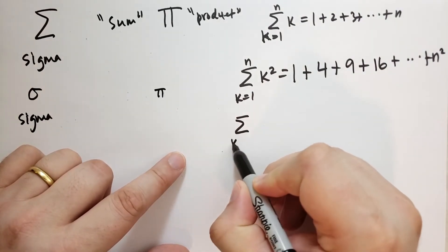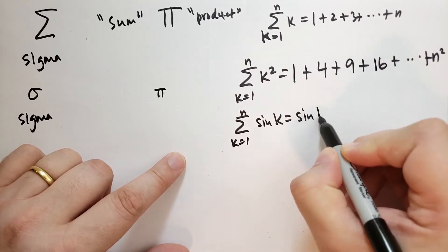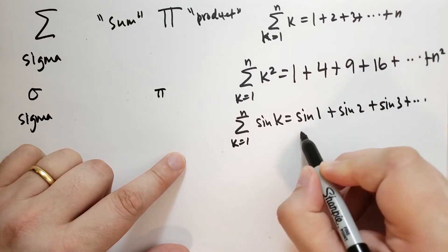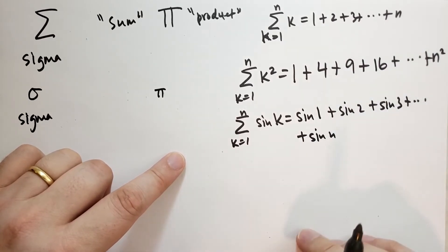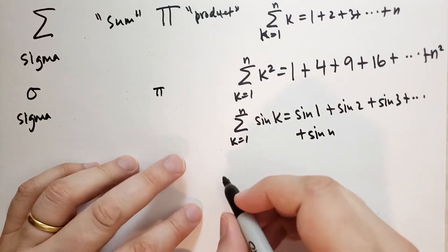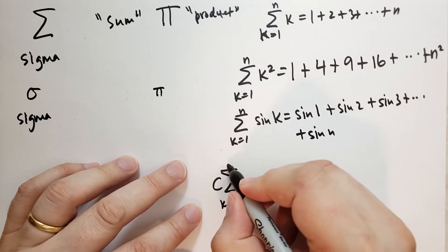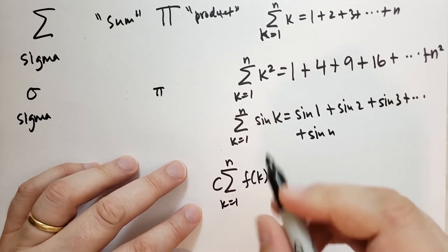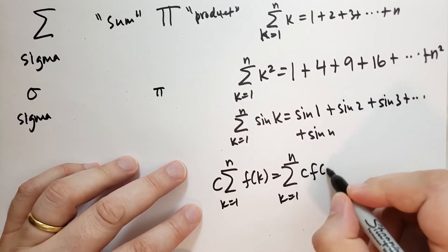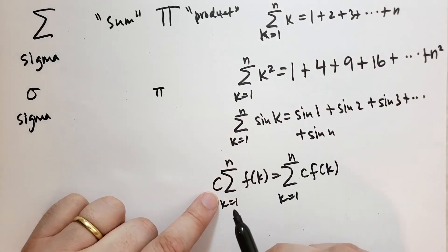Let's do the sum from k=1 to n of sin(k). That's going to equal sin(1) + sin(2) + sin(3) + ... + sin(n). Now, there are some properties of sigma notation. The simplest one is distributivity: a constant c times the sum from k=1 to n of f(k) is the same as the sum from k=1 to n of c·f(k). This makes sense because when you multiply a sum, each of the terms gets multiplied by that number.